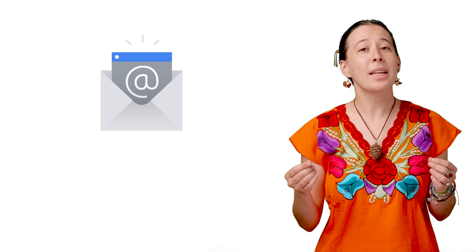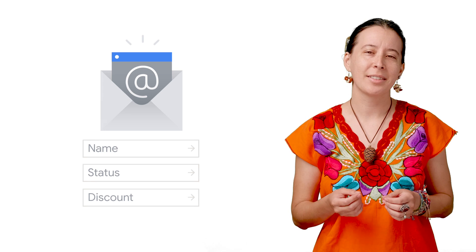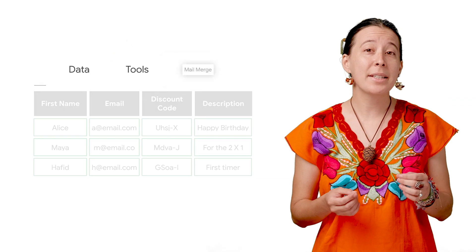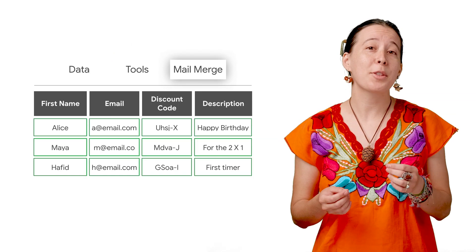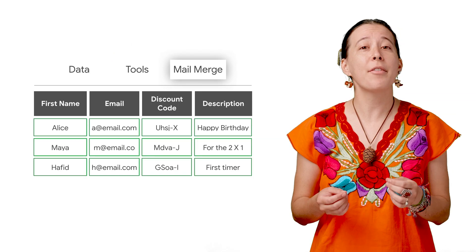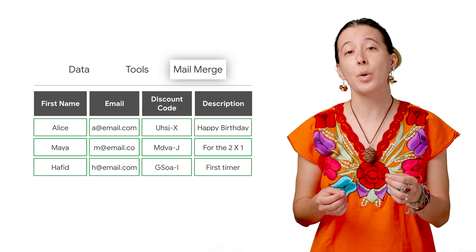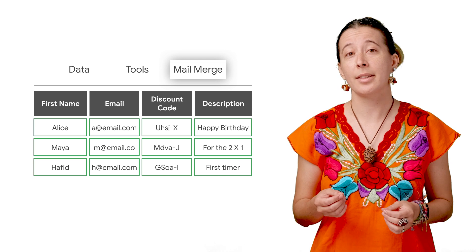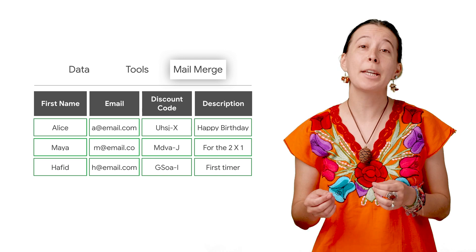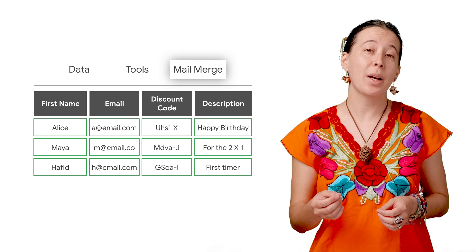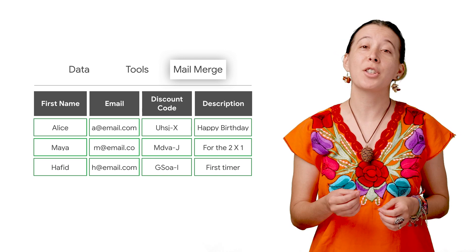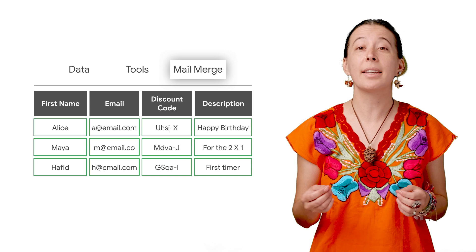This could be including a recipient's name, a specific status update, or maybe providing a unique discount code. Customization is possible by having every recipient's information stored in a Google Sheet and then clicking a button to run a custom function that sends out the emails.